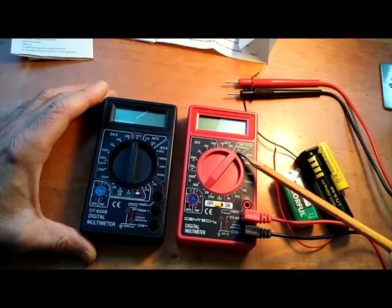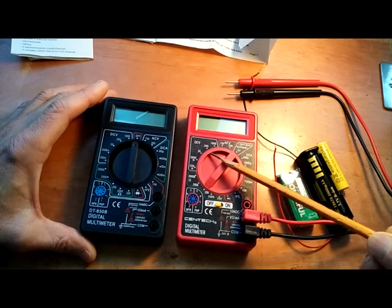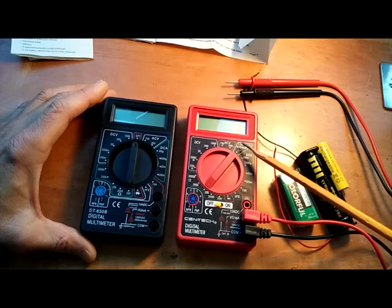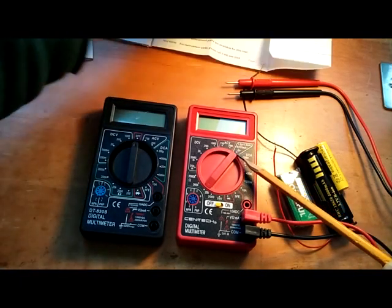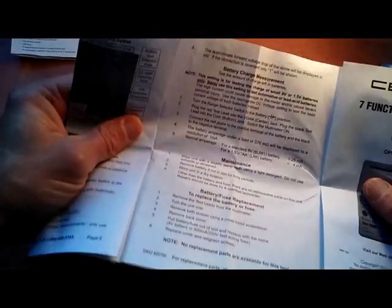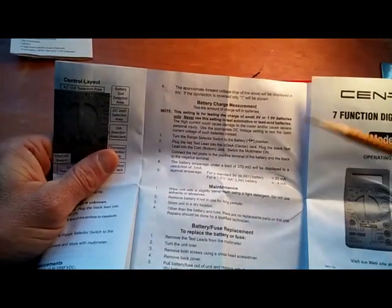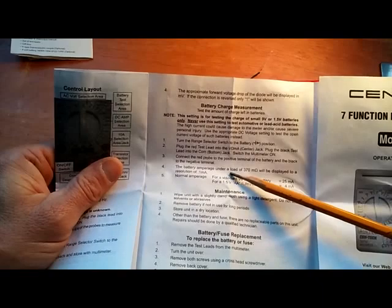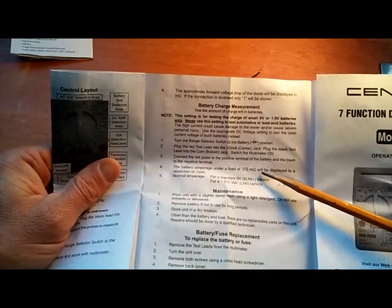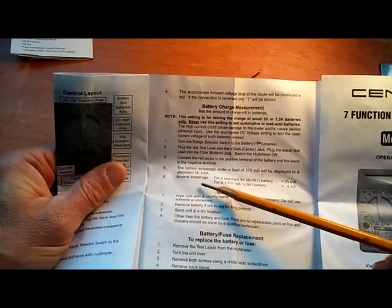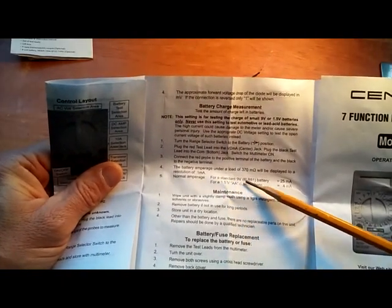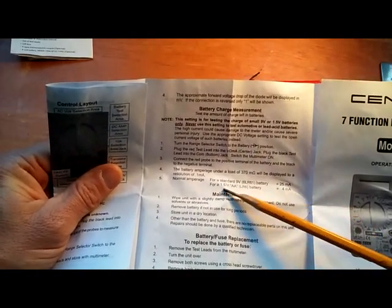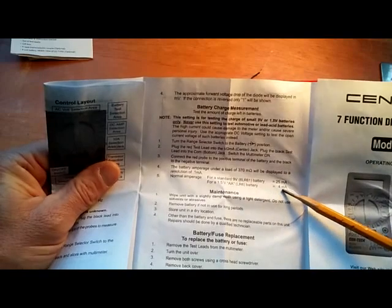which is really cool because of course you can test it under DC voltage here. But this is even better because according to the instructions here, the manual, this battery tester puts the battery under a load of 370 ohms, and it tells you under normal amperage for a standard 9-volt will be 25 milliamps. For a 1.5-volt should be 4 milliamps.